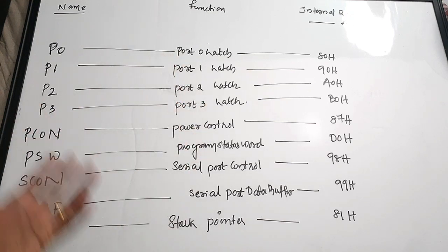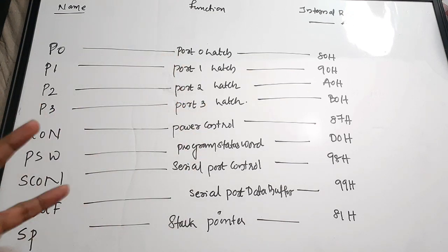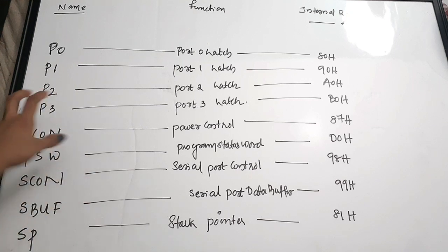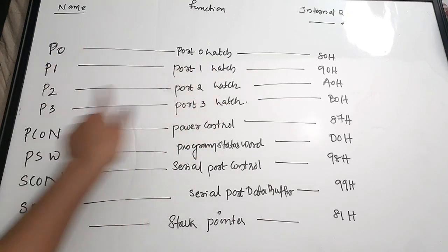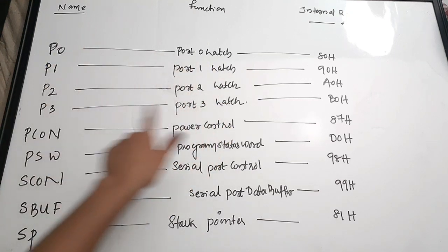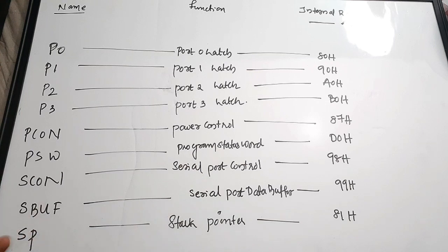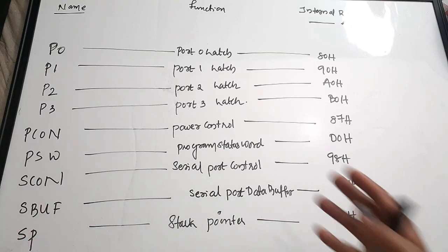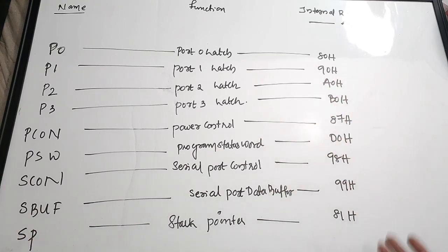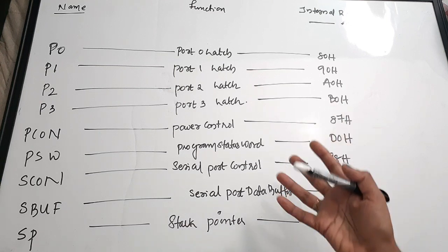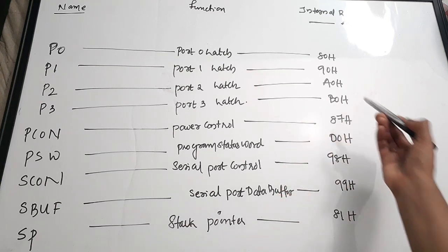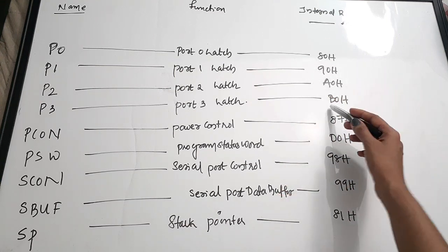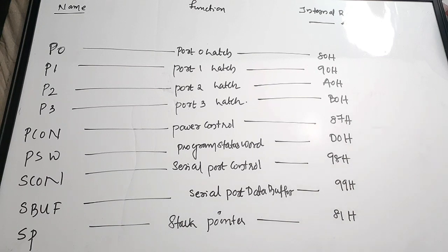The port latch registers are Port 0 latch, Port 1 latch, Port 2 latch, and Port 3 latch. Programming examples with these port latch registers will be covered in upcoming videos. Their addresses are 80H, 90H, A0H, and B0H respectively.